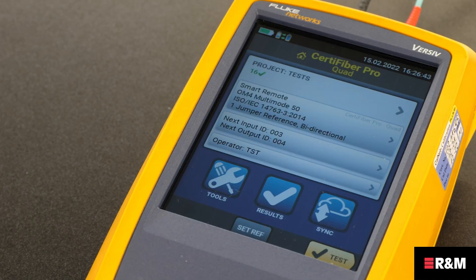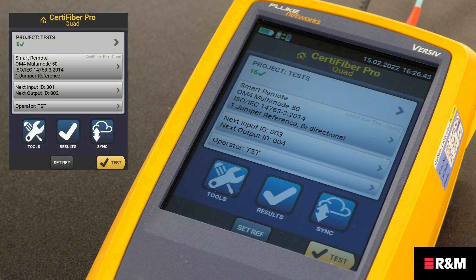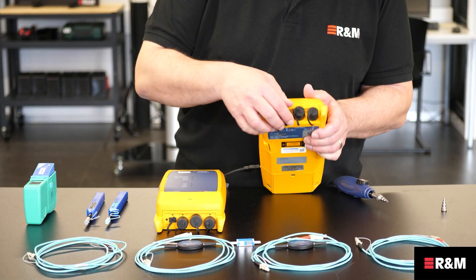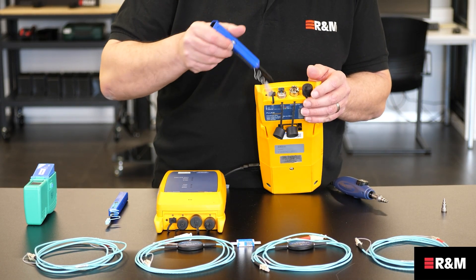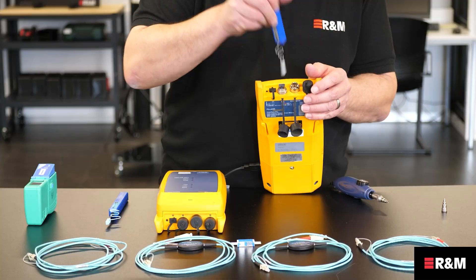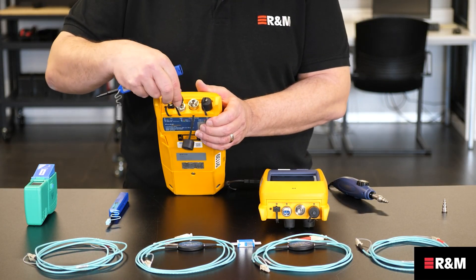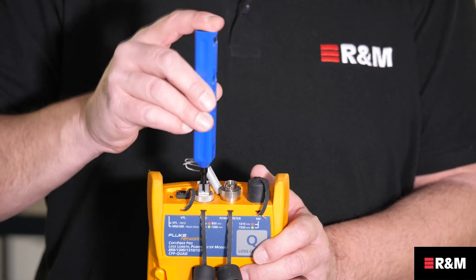Now let's begin to set the reference. Turn on the tester and remote and let them sit for a minimum of 5 minutes or at least for as long as they need to attain the ambient temperature. Make sure that the home screen shows the correct settings for the job and the test type is Smart Remote. First, please clean the connectors on the main tester and don't forget to do the same for the remote end.